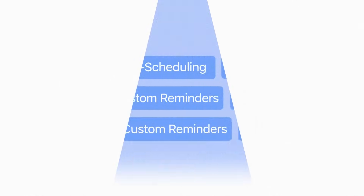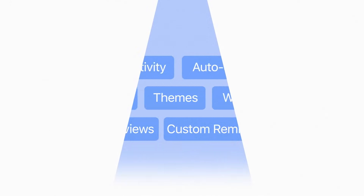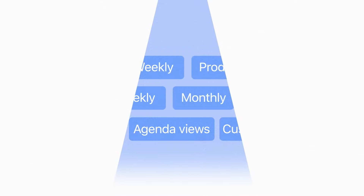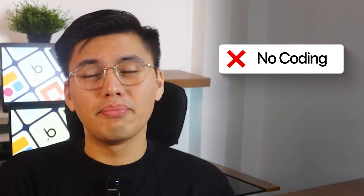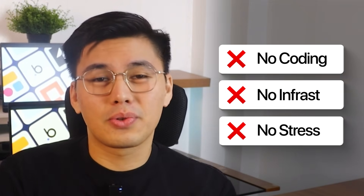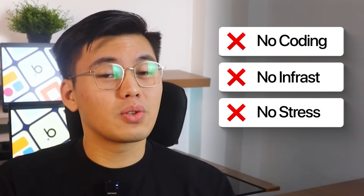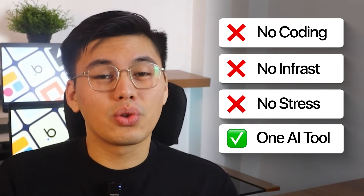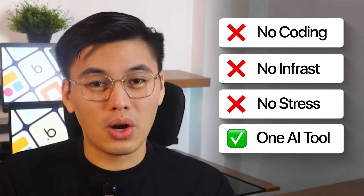Weekly, monthly, and agenda views, custom reminders, themes, productivity insights, and a smart auto-scheduling engine that detects conflicts and automatically finds better time slots — and we're putting it all together in under 10 minutes. No coding, no infrastructure, no stress. Just one AI tool, a few clear prompts, and a fully functional calendar app by the end of this walkthrough.